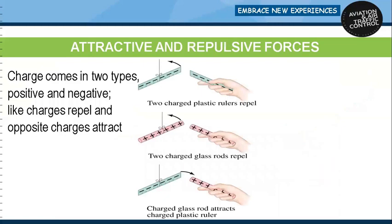One of the most fundamental laws of static electricity, as well as magnets, deals with attraction and repulsion. Like charges repel each other and unlike charges attract each other. All electrons possess a negative charge, and as such will repel each other. Electrons and protons are opposite in their charge and will attract each other.